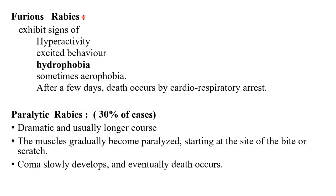In furious rabies, signs include hyperactivity, excited behavior, and the classical hydrophobia — where just the sight of water causes severe laryngospasm and the patient cannot swallow. Aerophobia may also occur — the patient recoils if a fan is directed at them. After a few days, death occurs by cardiorespiratory arrest. In paralytic rabies, which accounts for 30% of cases, the course is longer. Muscles gradually become paralyzed starting at the bite site, coma develops slowly, and eventually death occurs.